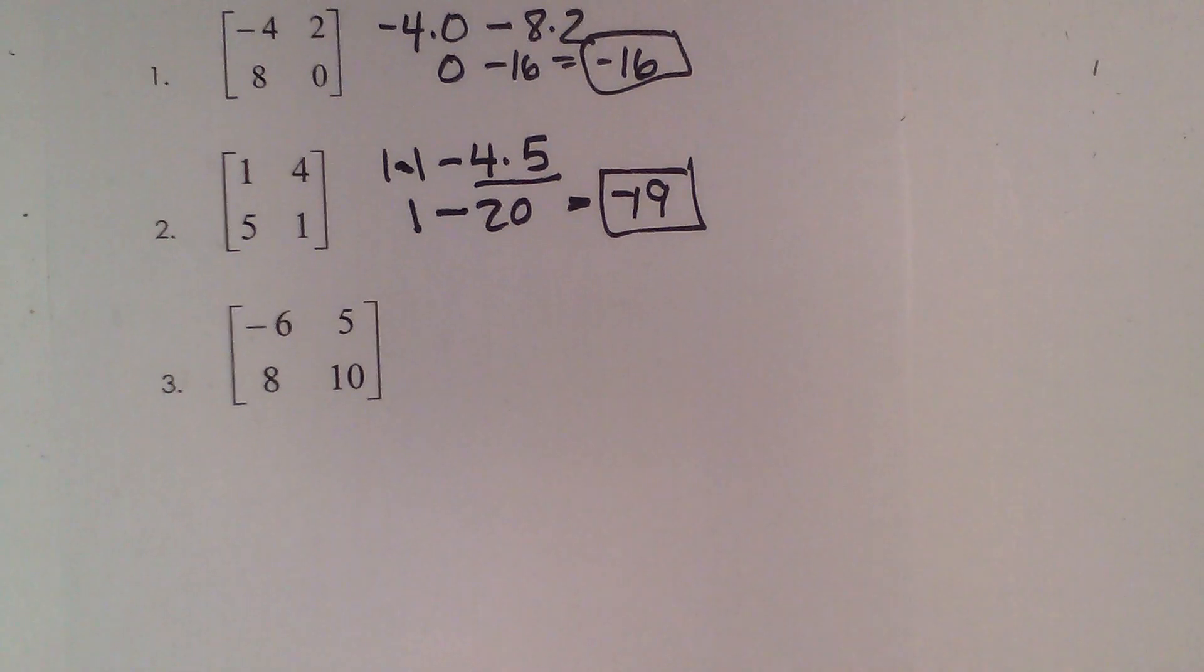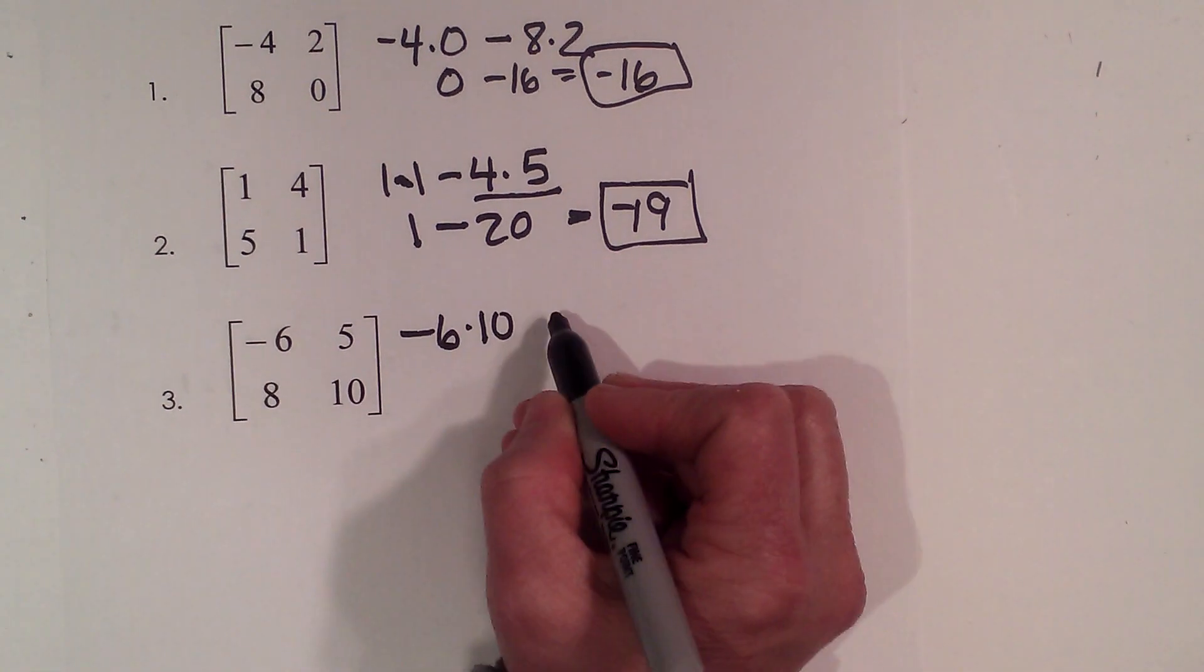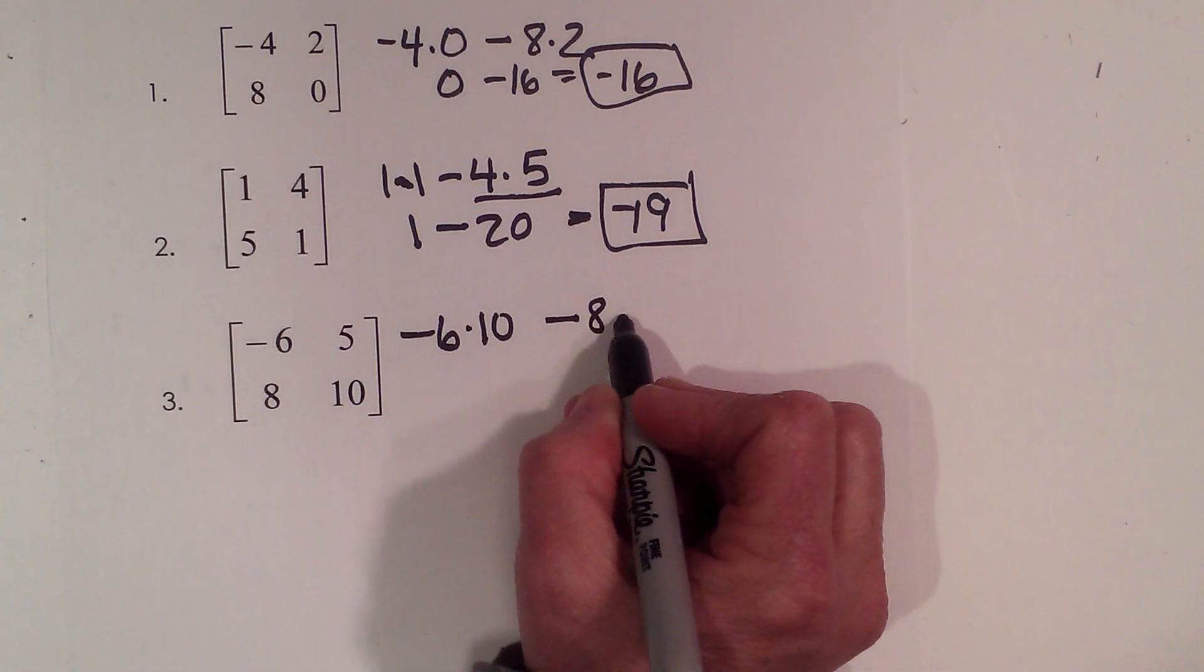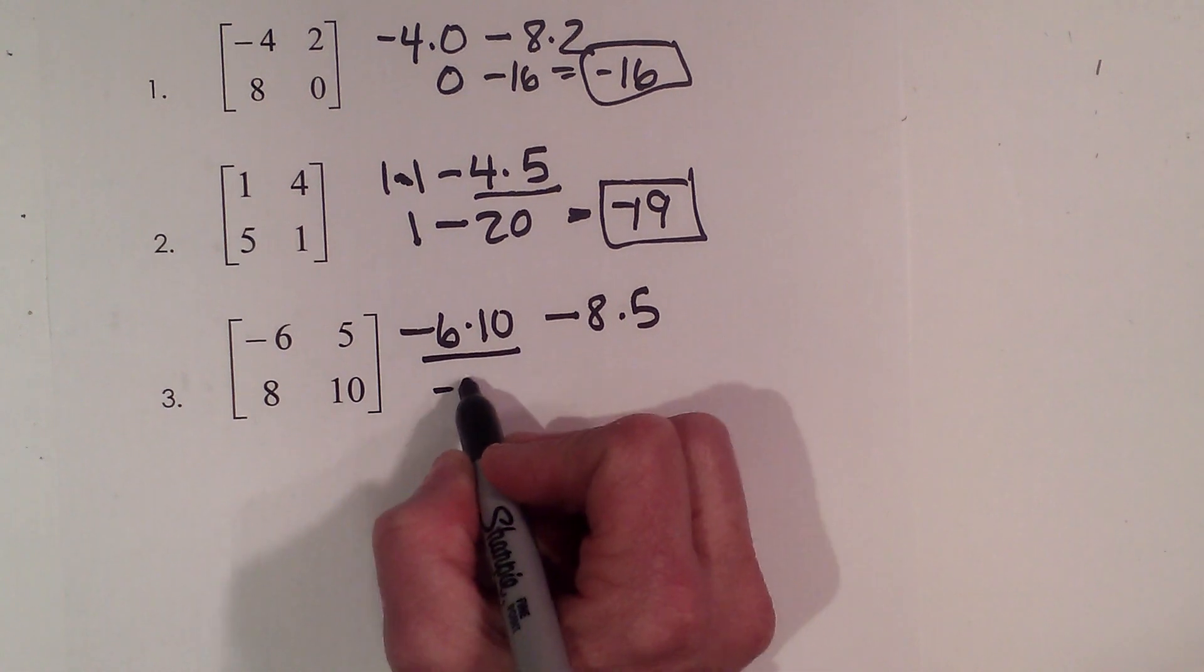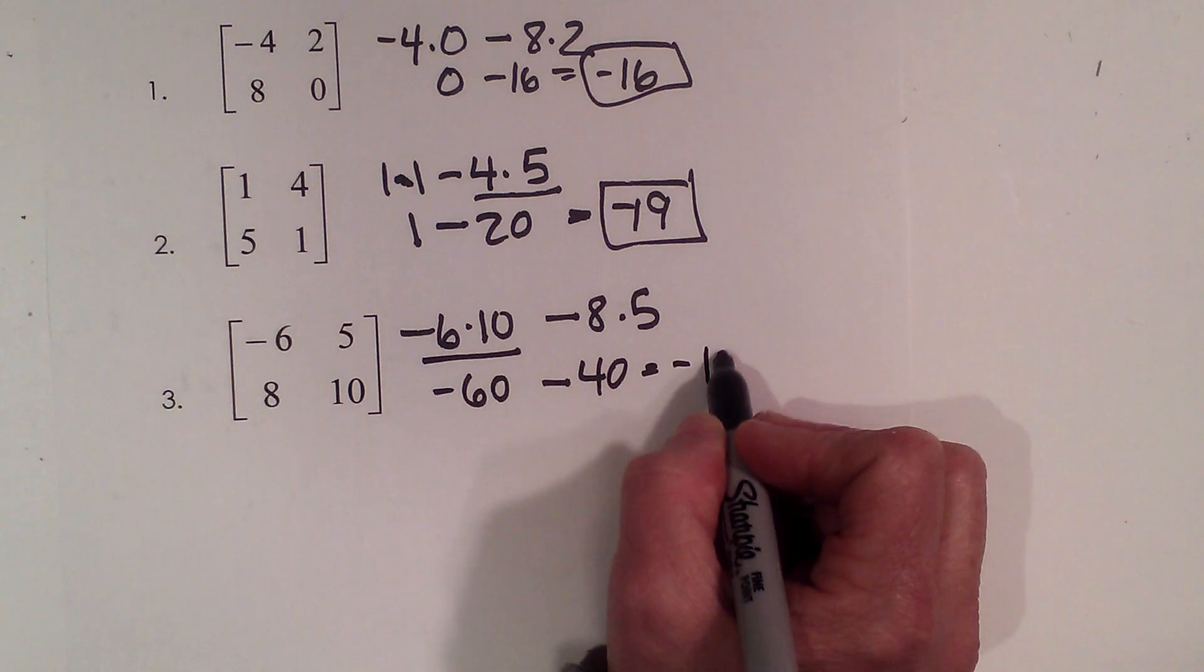Let's try one more. Negative 6 times 10 minus 8 times 5. So negative 60 minus 40 is negative 100.